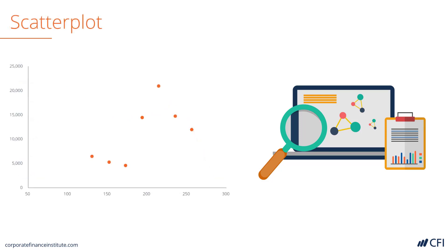A scatter plot is very useful when you have two series of data that you want to graph together and see if there's a correlation. Imagine that on one axis we have the monthly cash flow of the business, and on the other axis we have the average customer acquisition cost. You might expect there is a correlation between cash flow and customer acquisition cost. What you would do in Excel is plot a trend line and see if there is a relationship — the R squared will tell you if there is. This is covered in our math for corporate finance course as well as our budgeting and forecasting course.